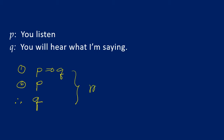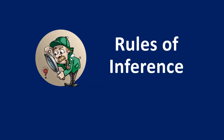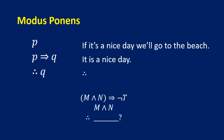Modus ponens is one of the rules of inference. Its form is: you have an implication P implies Q, and the hypothesis P is known to be true; therefore the conclusion Q must be true. Example: 'If it's a nice day, we'll go to the beach. It is a nice day. Therefore, we will go to the beach.' Another example with symbolic form: M and N implies not P; M and N is true; therefore, by modus ponens, not P must be true.